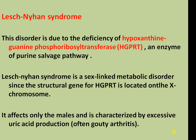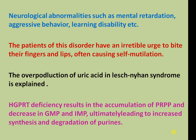Lesch-Nyhan syndrome is a disorder due to deficiency of hypoxanthine-guanine phosphoribosyltransferase (HGPRT), an enzyme of the purine salvage pathway. This is a sex-linked metabolic disorder, since the structural gene HGPRT is located on the X chromosome. It affects only males and is characterized by excessive uric acid production, gouty arthritis, and neurological abnormalities such as mental retardation, aggressive behavior, and learning disability. Patients have an irritable urge to bite their fingers and lips, causing self-mutilation.